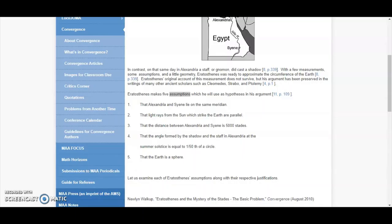Eratosthenes made five assumptions that were not good enough for his experiment. 1. That Alexandria and Syene lie on the same meridian. 2. That light rays from the sun which strike the earth are parallel. 3. That the distance between Alexandria and Syene is 5,000 stades.